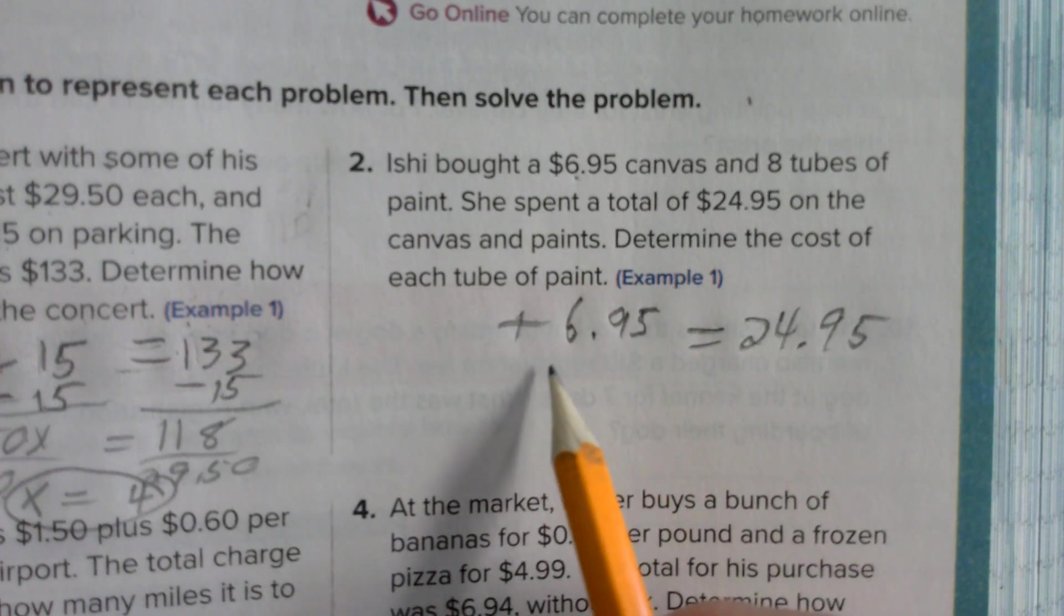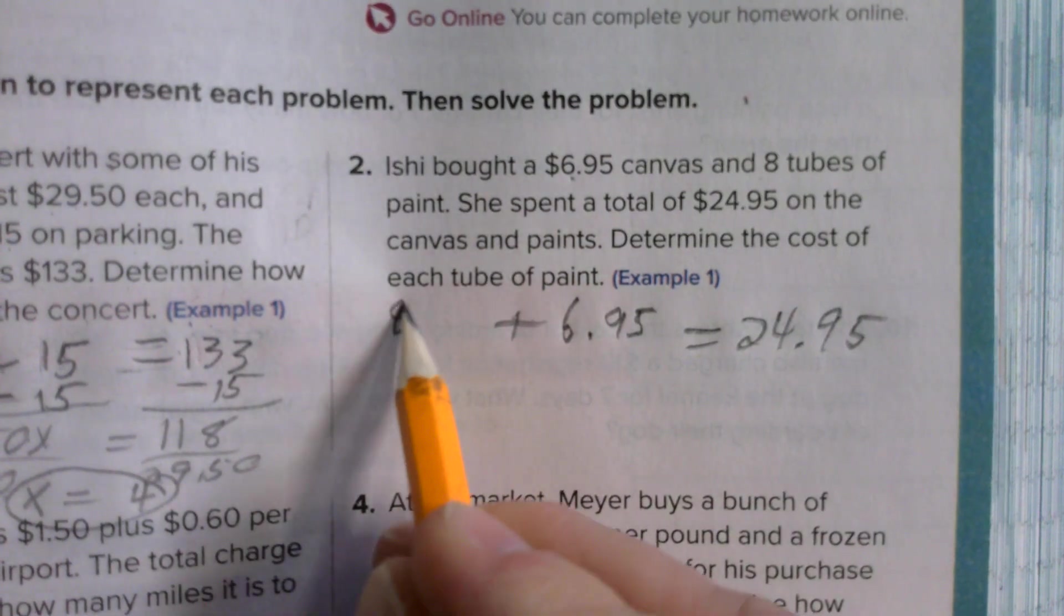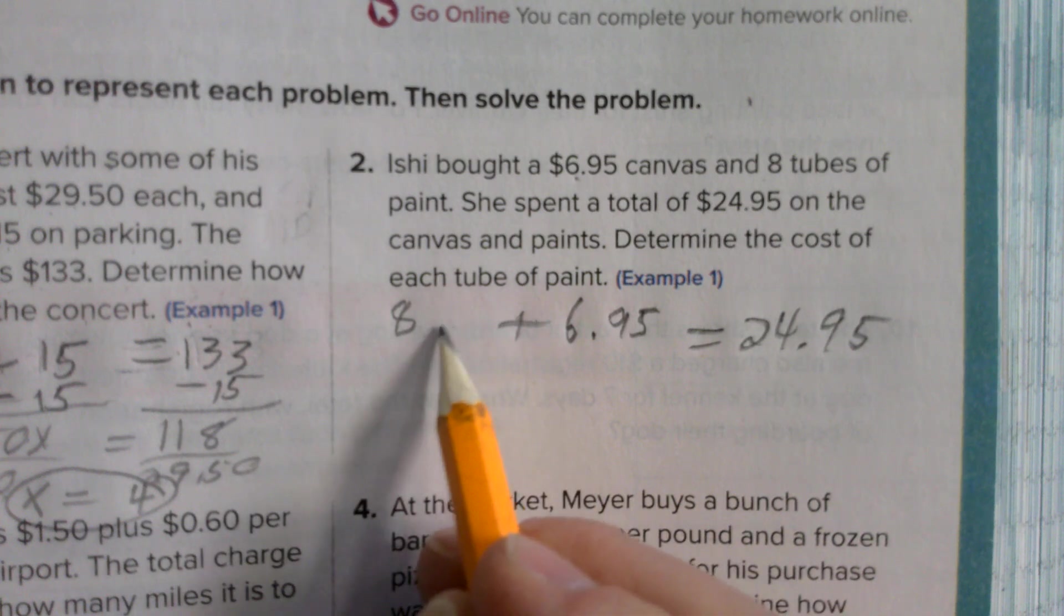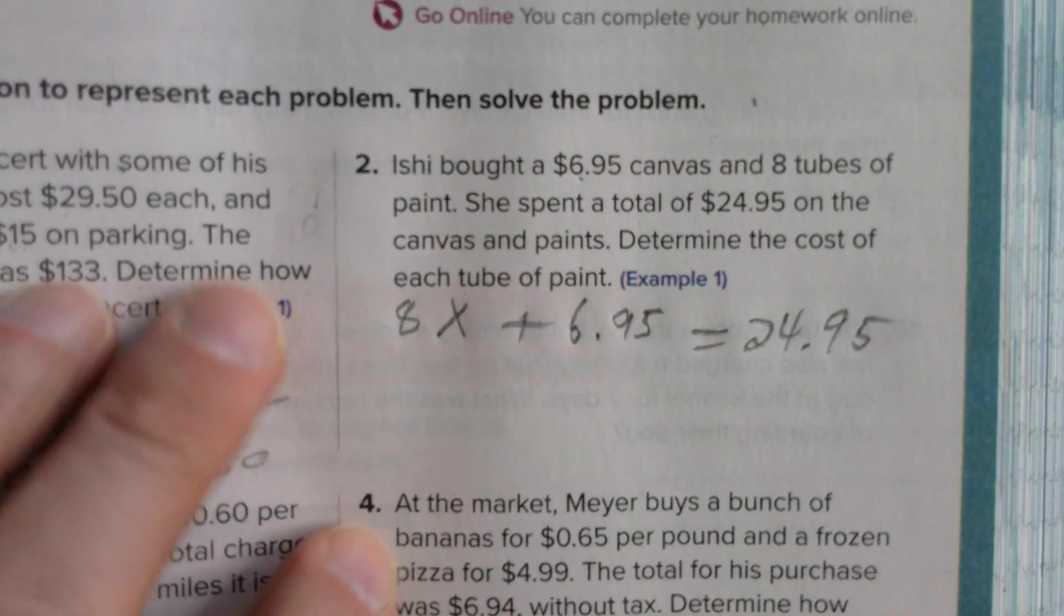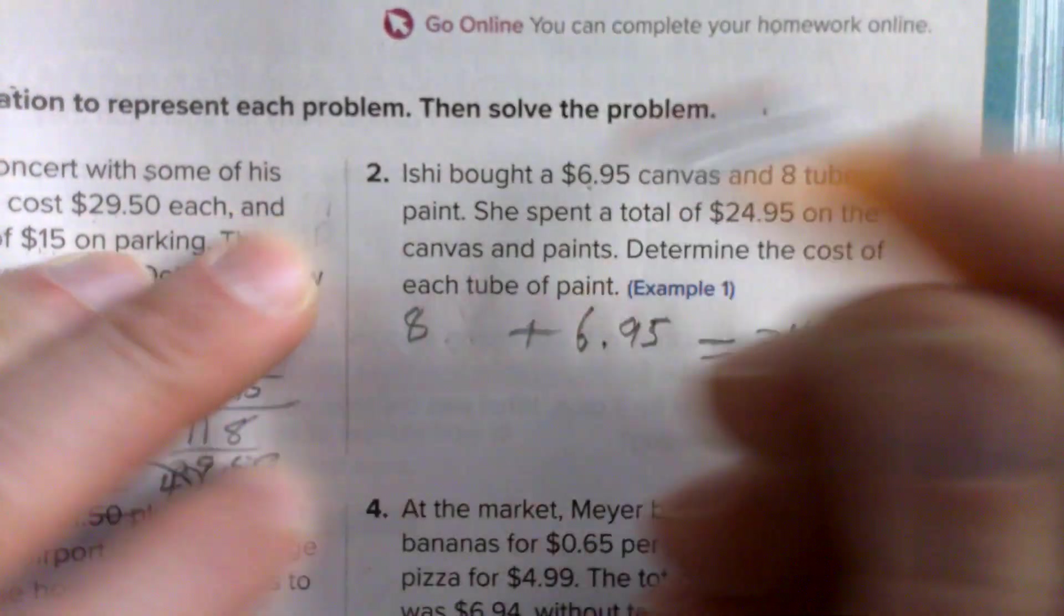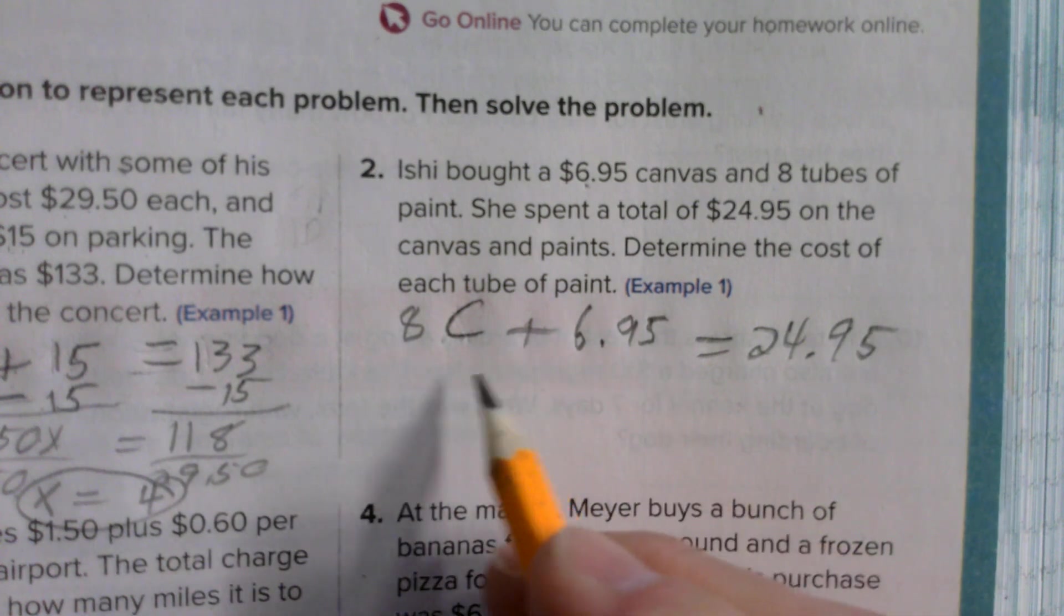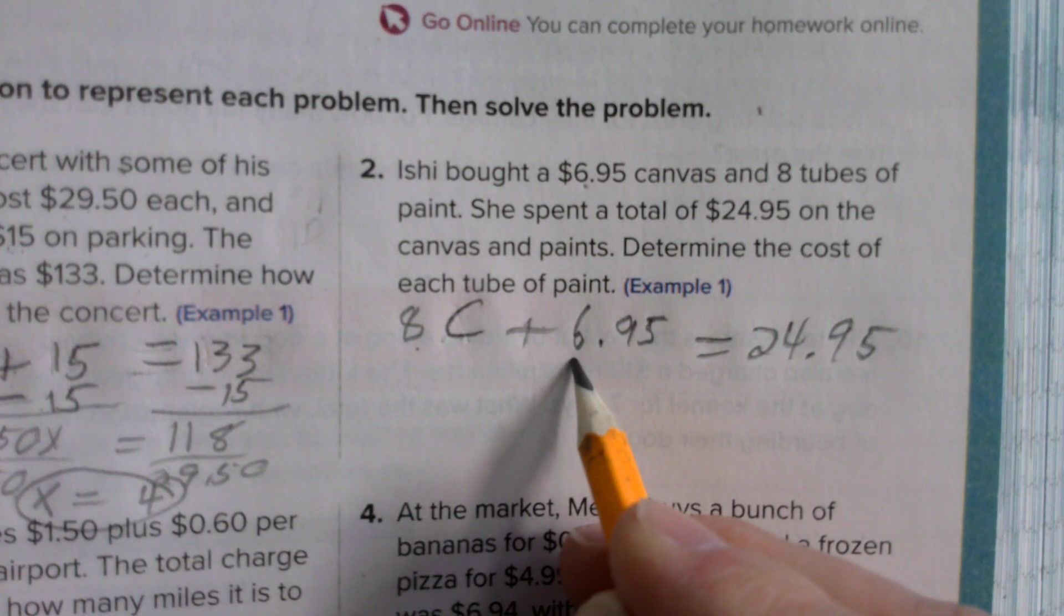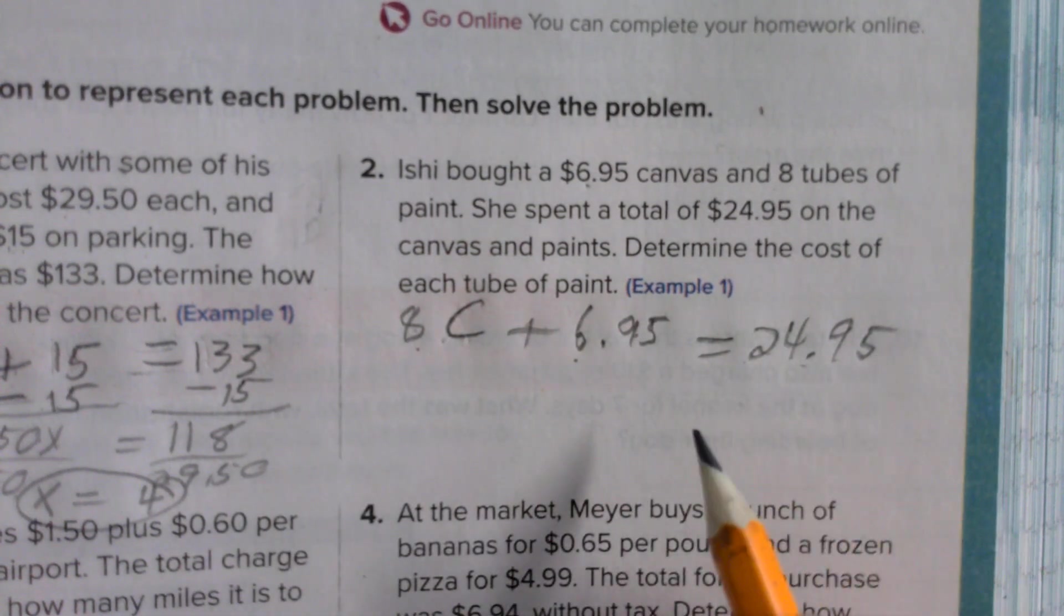Apparently she's making one painting. Eight tubes of paint, so we know she bought eight, but we don't know how much the cost of each tube is. So let's let the cost of each tube be represented by X. Actually, let's do C in this one. I like C for cost. So eight times the cost of each tube is going to give us how much she paid for the paint, and we know that the canvas is $6.95 and these two add together to be $24.95.